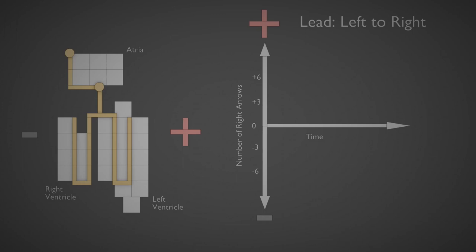and we'll rename our vertical axis to the number of right arrows because the positive electrode is on the right. Once we start this, we'll see what happens.